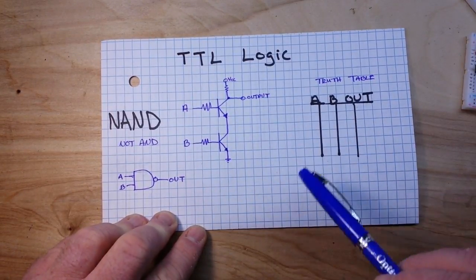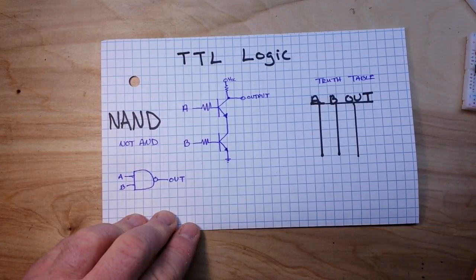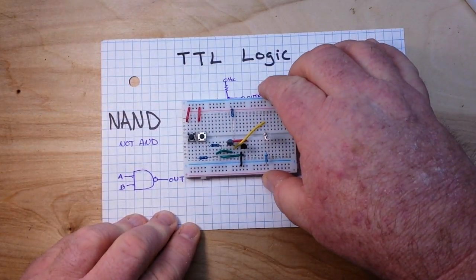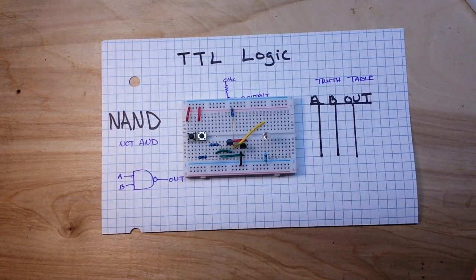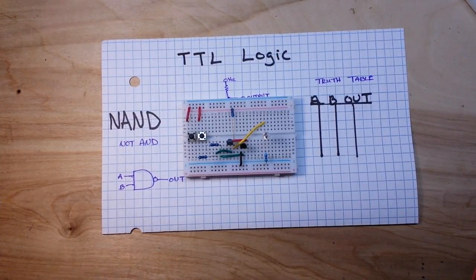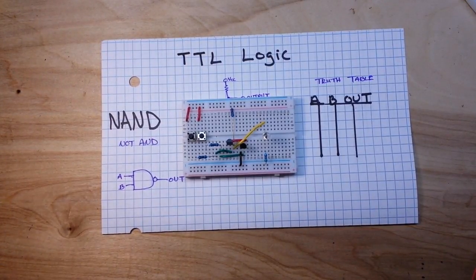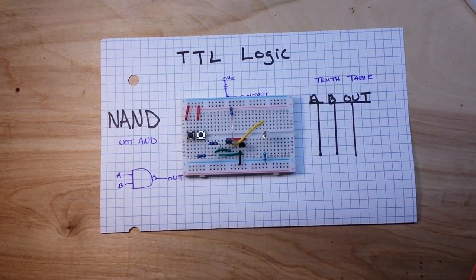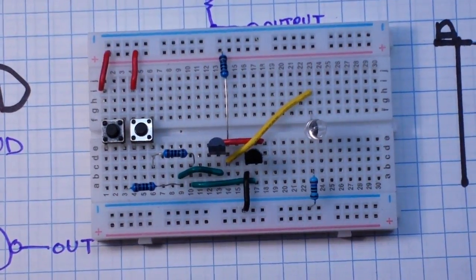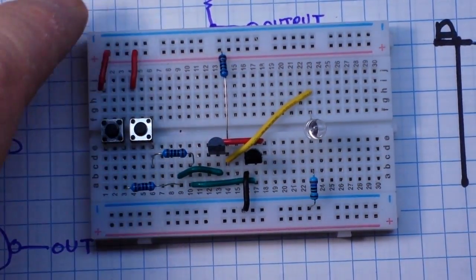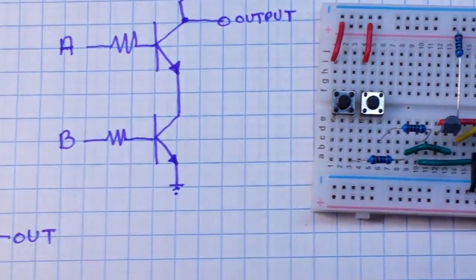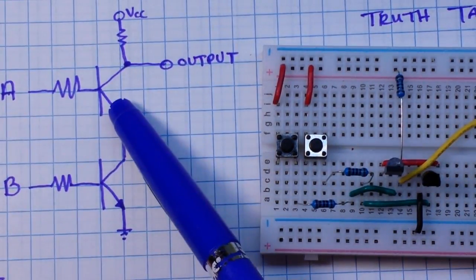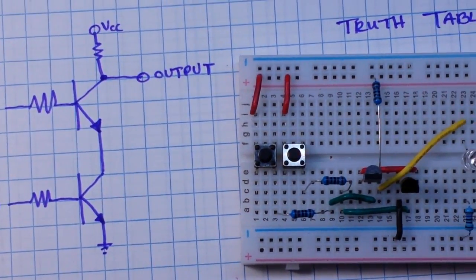And then we'll work out the truth table for it. So here is our NAND gate. Now the question is can I find my remote control? Nope. So we'll just zoom in by hand.